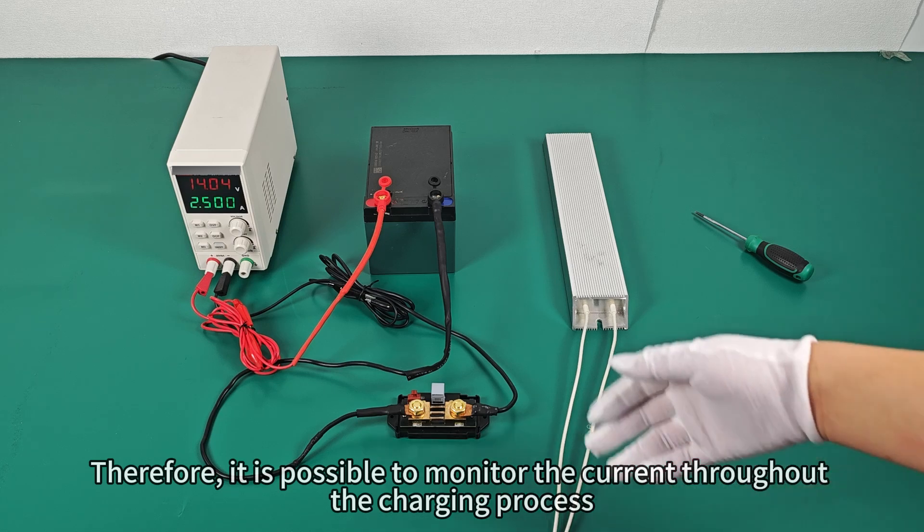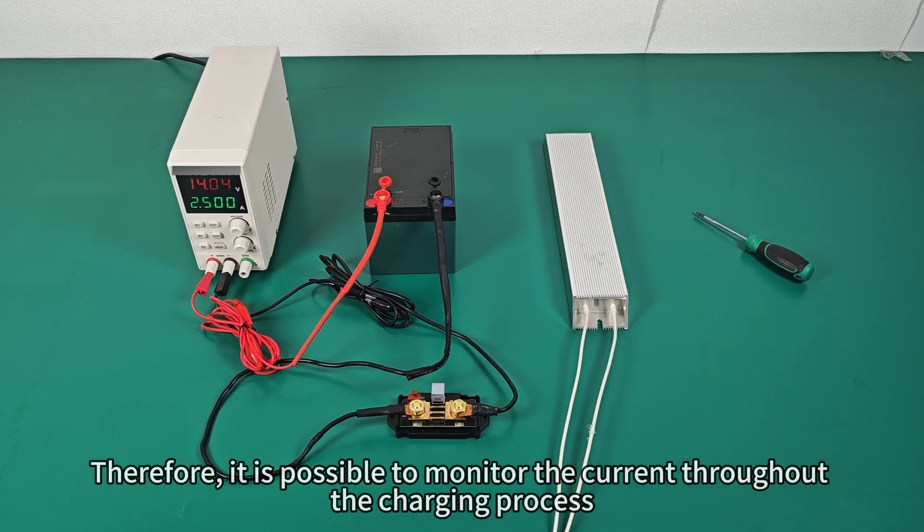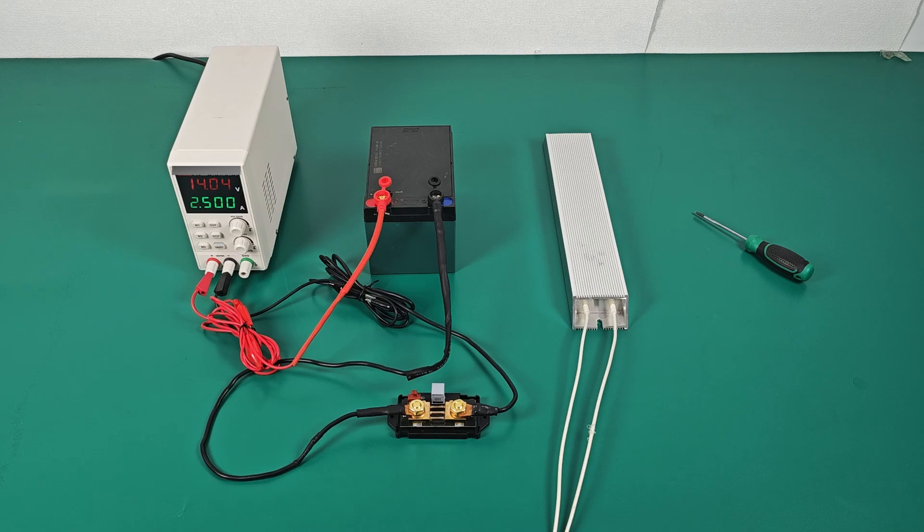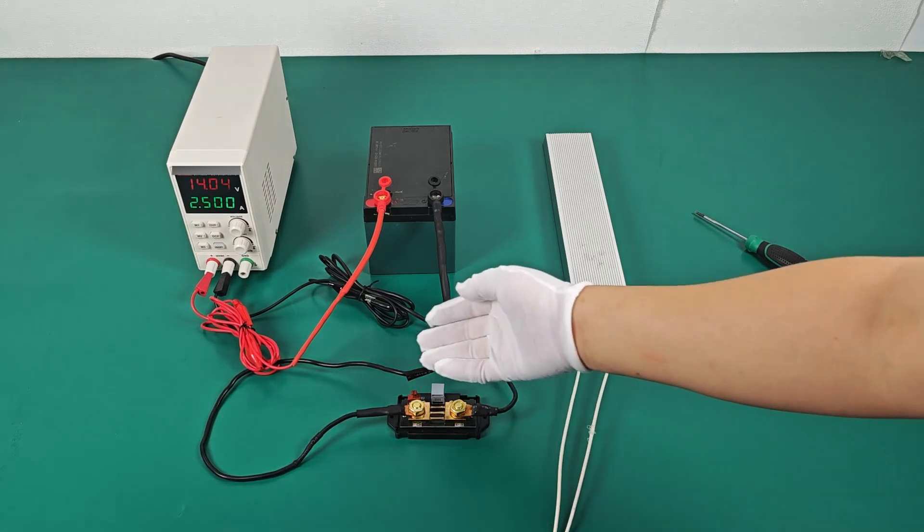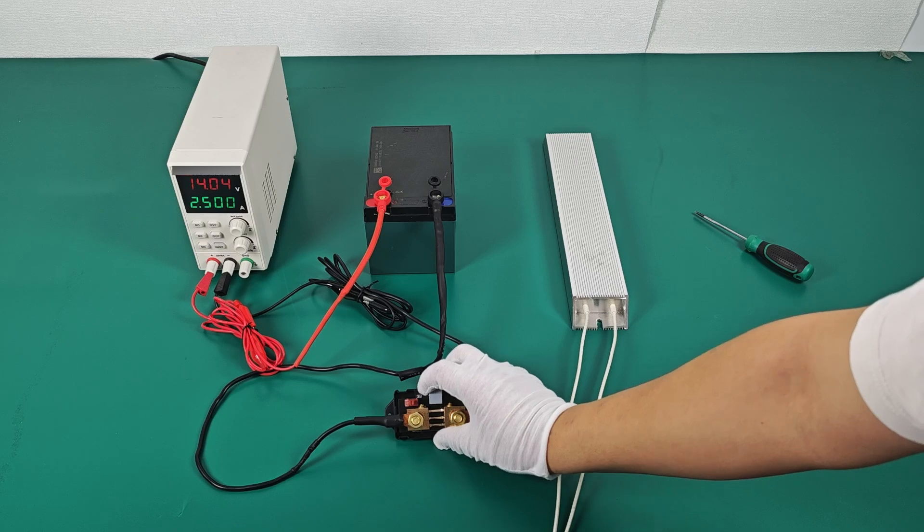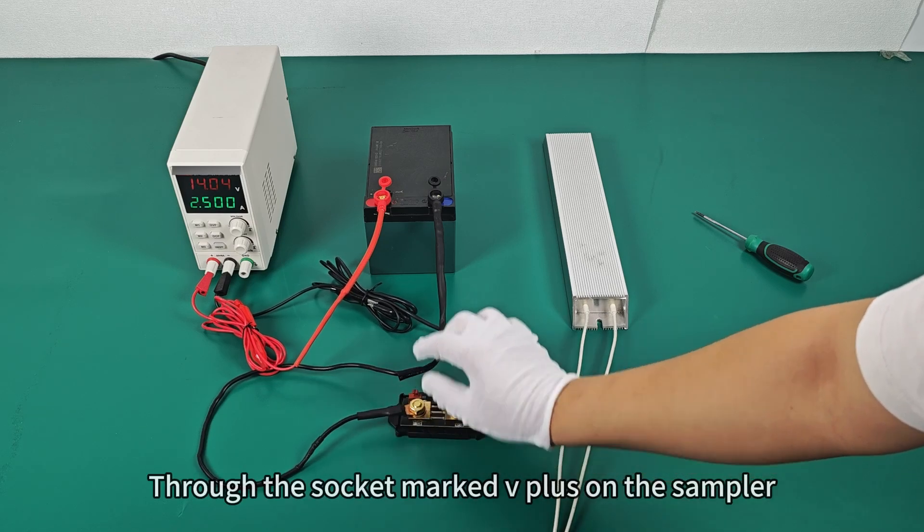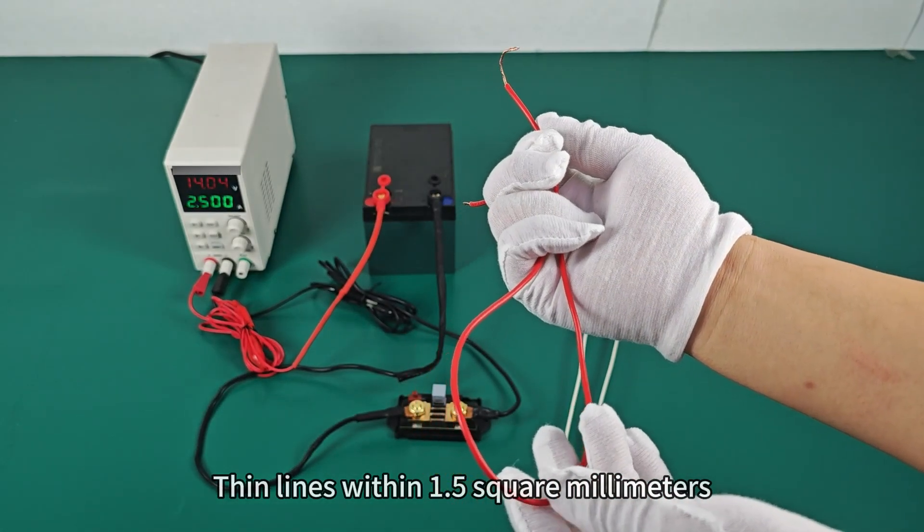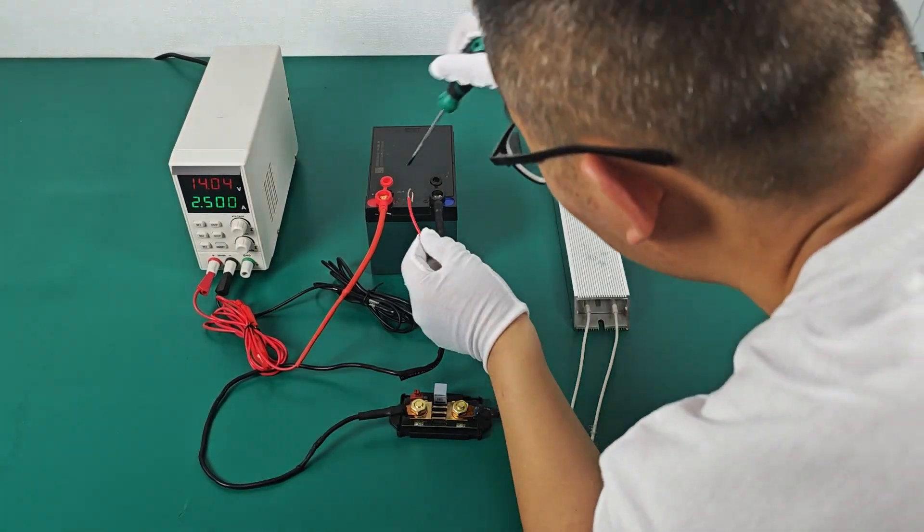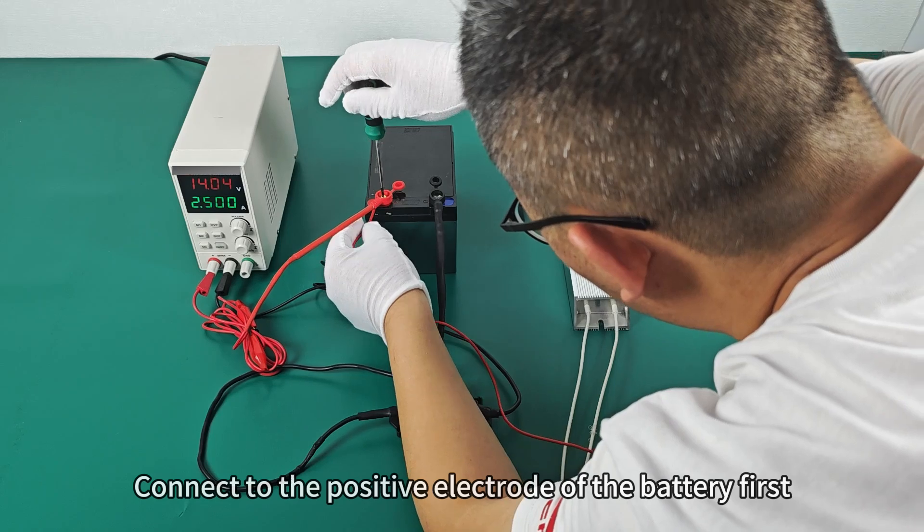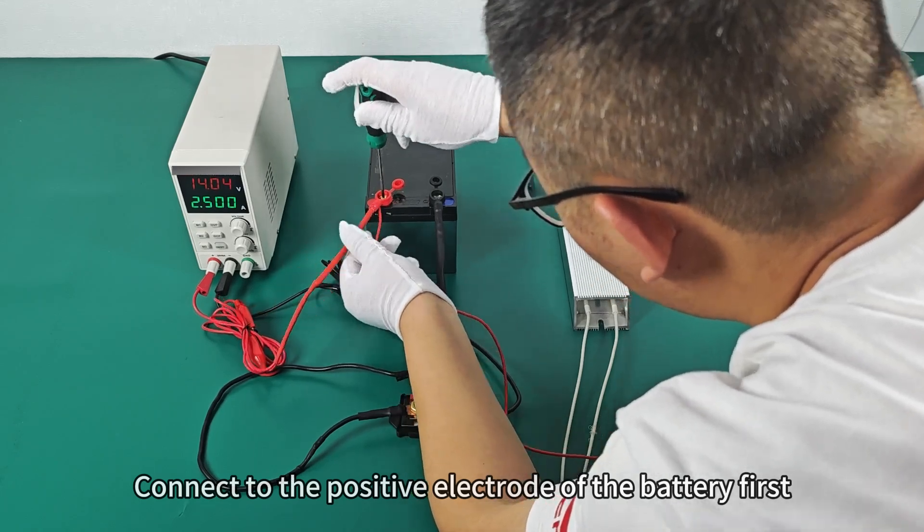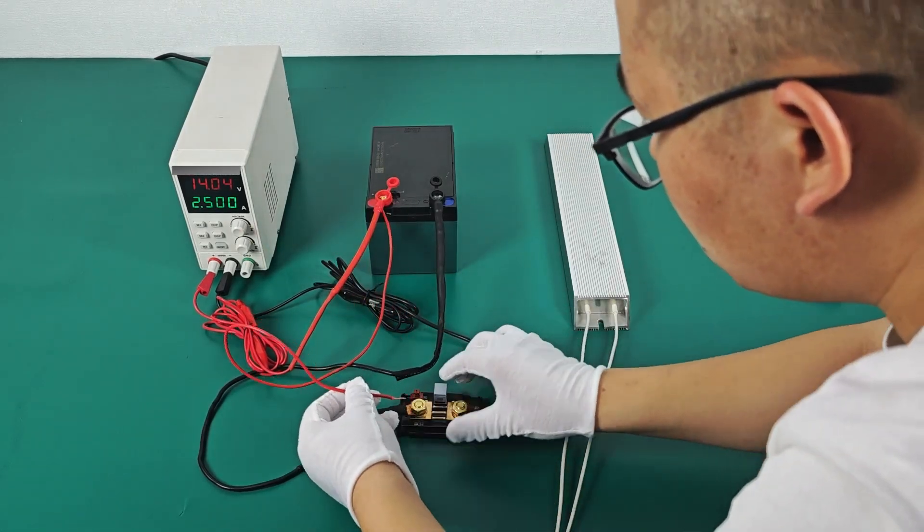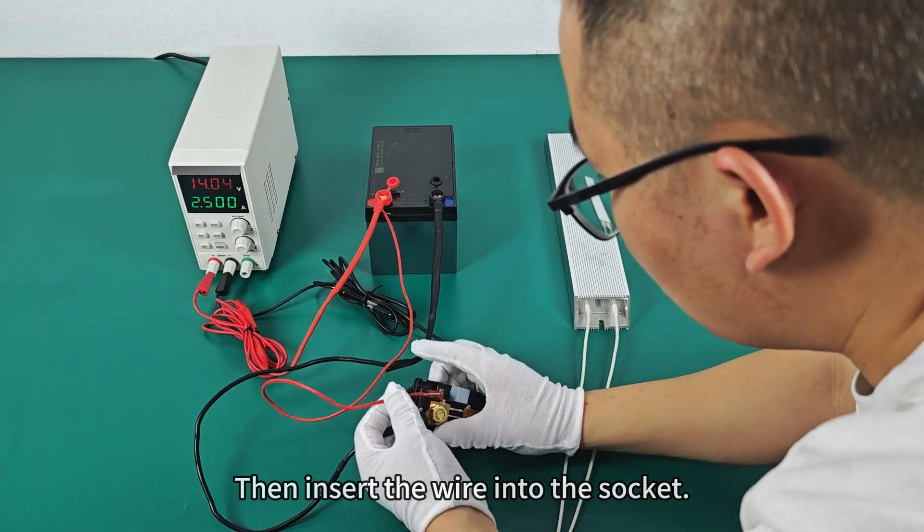Next, we connect the positive wire of the battery. Through the socket marked V plus on the sampler. We can find one thin line within 1.5 square millimeters. Connect the positive electrode of the battery. Then insert the wire into the socket.